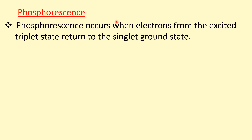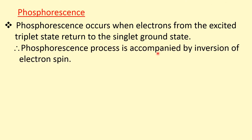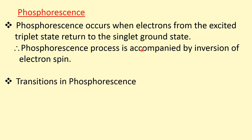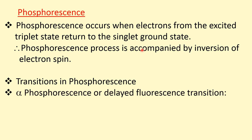Phosphorescence occurs when electrons from the excited triplet state return to the singlet ground state. This is an electronic transition between two states of different spin multiplicity. During phosphorescence, the spin of the electron changes — that is, inversion of electron spin. For alpha phosphorescence, the transition is from the first triplet excited state T1 to the first singlet excited state S1, and from S1 directly to S0, the singlet ground state.